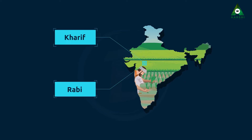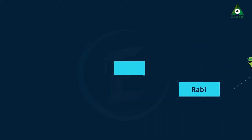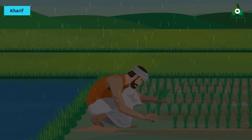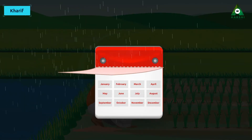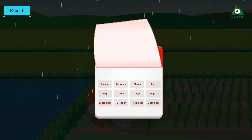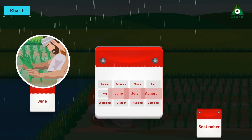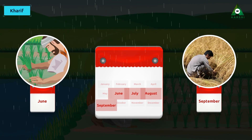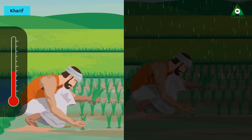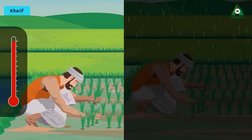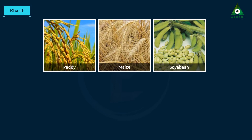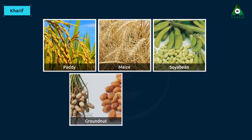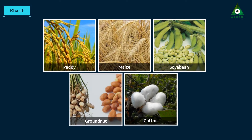Kharif and Rabi. Kharif crops are grown in the rainy season, that is, during monsoon. Kharif crops are usually sown in June and harvested in September. Kharif crops require high temperature and plenty of rainfall to grow properly. Paddy, maize, soya bean, groundnut and cotton are examples of Kharif crops.